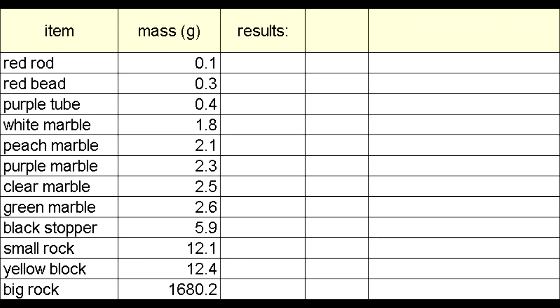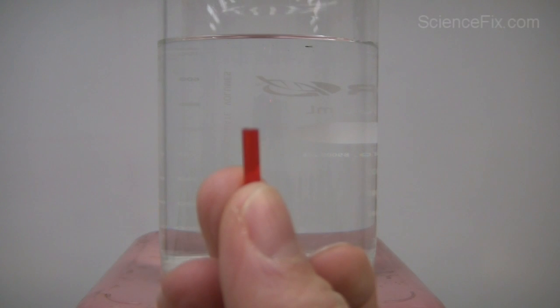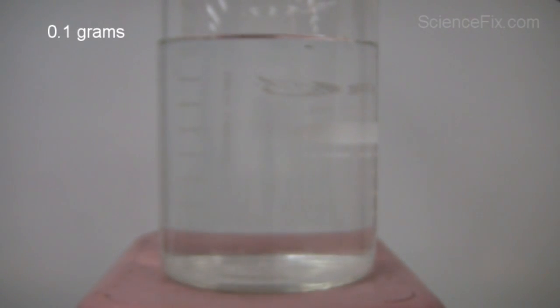Again, here's our list of items and their masses, and let's see what happens. Here's the red rod, and this is the least massive object at 0.1 grams, and that object sinks.